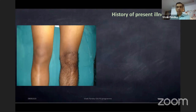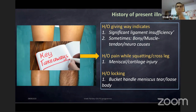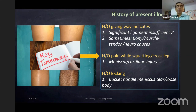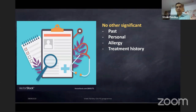Key takeaways from history: giving way usually signifies ligament insufficiency, but bony, muscle, or neurological causes are also possible. After a twisting injury to the knee, the most common problem is ACL, PCL, or other ligament injury with meniscus involvement. Pain on squatting and sitting cross-legged usually signifies meniscal or cartilage injury. Locking can happen in bucket-handle meniscal tear, loose body, or cartilage flap.